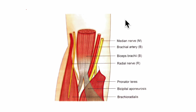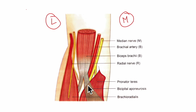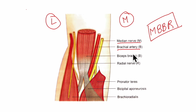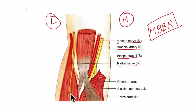Now let us learn about the contents of the cubital fossa. From the medial to the lateral side, the contents can be remembered using the mnemonic MBBR: M stands for the median nerve, the first B stands for the brachial artery, the second B stands for the biceps brachii muscle, and R stands for the radial nerve.